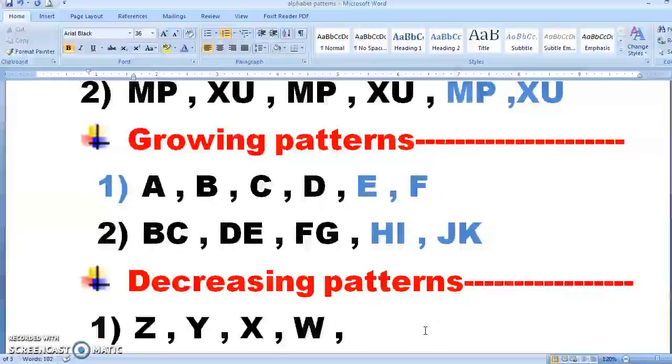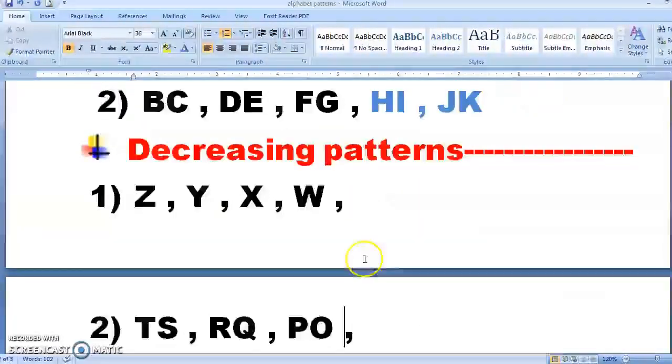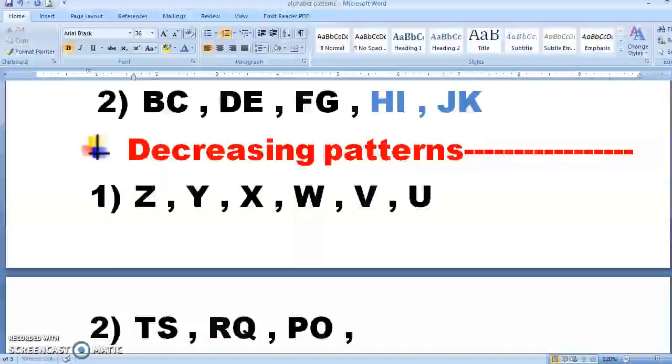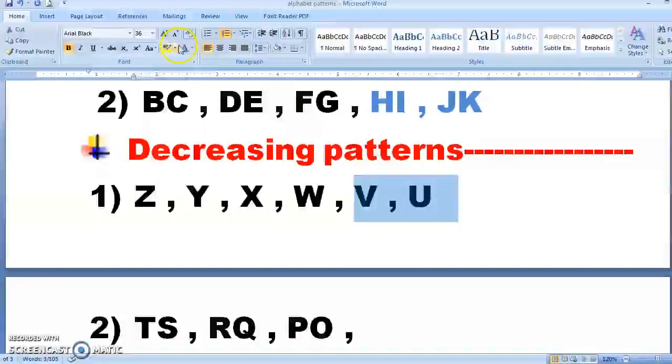Now decreasing pattern. As the name suggests, the pattern will be in decreasing order. Z. Before Z what comes? Y. And before Y, X. Before X, W. What do you say? Which alphabet will come before W? Yes, V. And before V, U. So it will keep on decreasing like this.